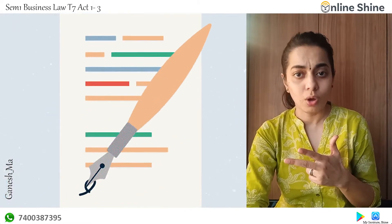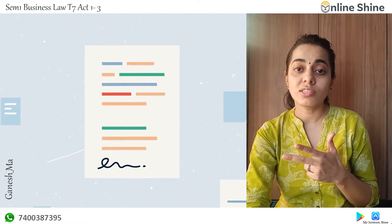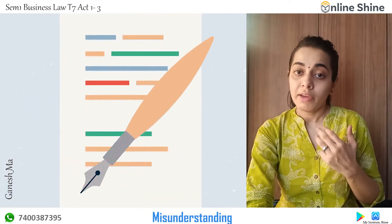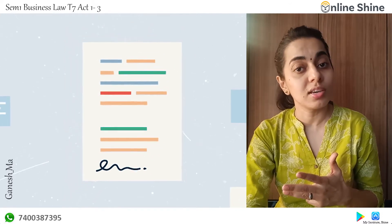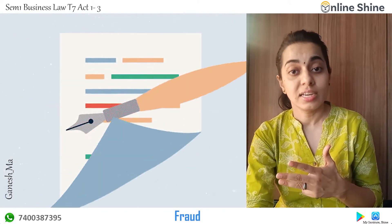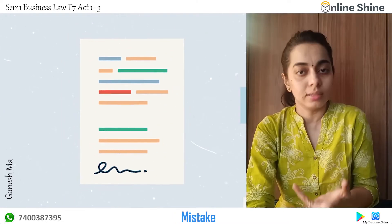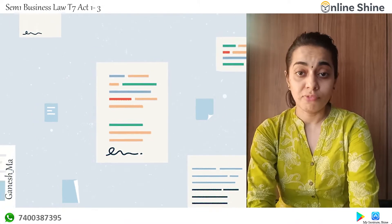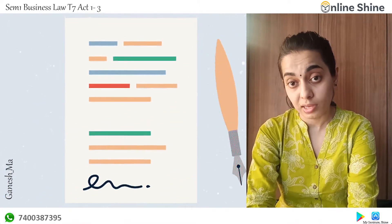When it comes to fraud, it is purposely deceiving someone. The last element is mistake — I think everyone knows what a mistake means. So when it comes to coercion, or physical force, it means forcing someone, keeping them at gunpoint, or kidnapping someone — any such activity through which my willingness was never there but I still had to enter into the contract.